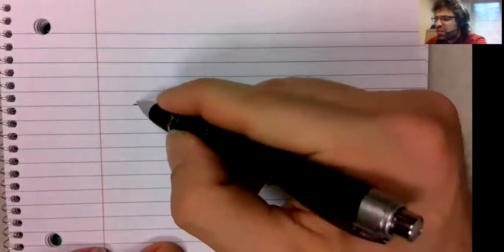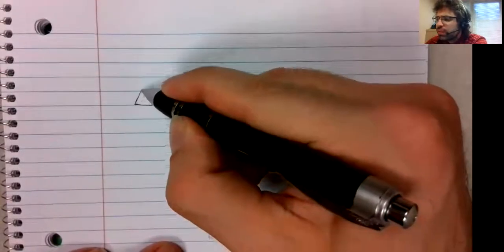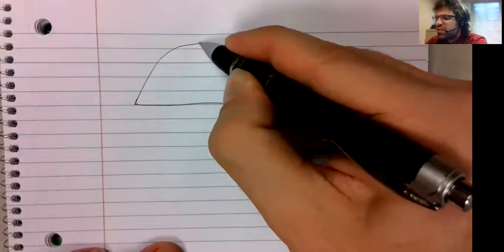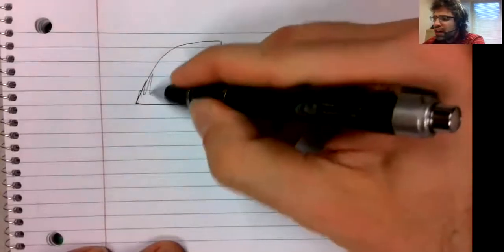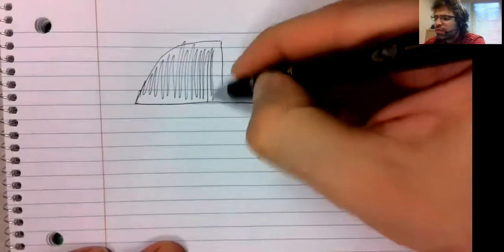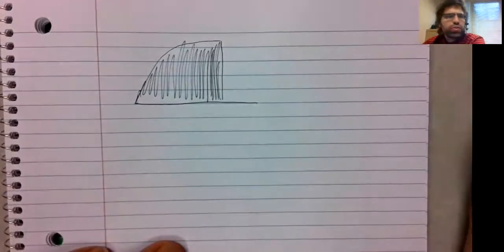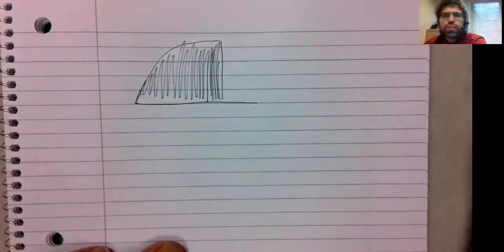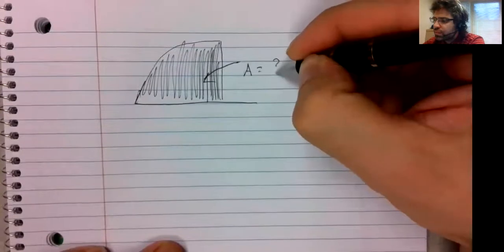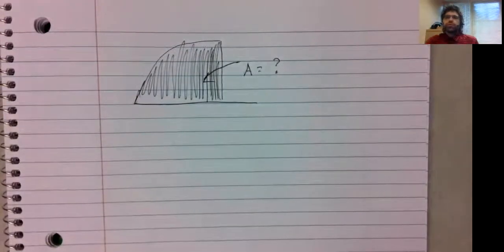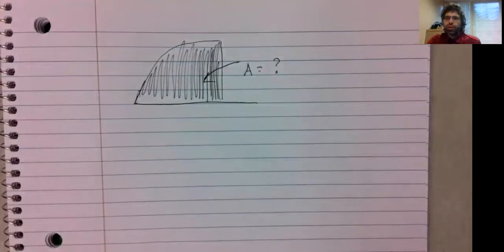The formula on the previous frame neglects air resistance. A more realistic speed curve is probably something like that. And now if we want the area under a curve, it's no longer a simple geometric problem. It has turned into a calculus problem.